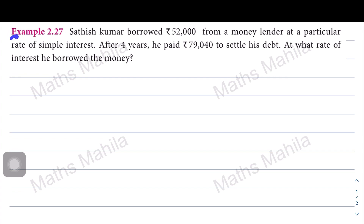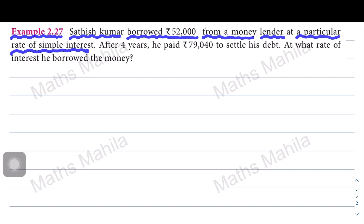In this video example 2.27, Satish Kumar borrowed rupees 52,000 from a money lender at a particular rate of simple interest. After 4 years, he paid rupees 79,040 to settle his debt. At what rate of interest did he borrow the money?